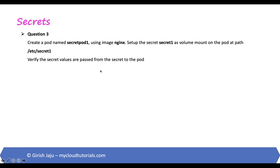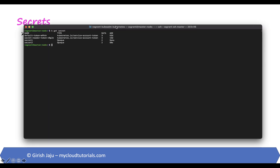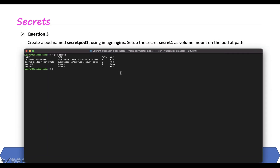Let's move on to the next question. Create a pod named secret-pod-one using image nginx, set up secret-one as a volume mount on the pod at path /etc/secret-one. Verify the secret values are passed from the secret to the pod. We'll create this pod using the secret from question one and mount it at that particular path. We'll use an imperative command to generate the pod configuration file, then add the secret details.